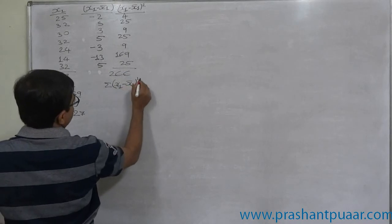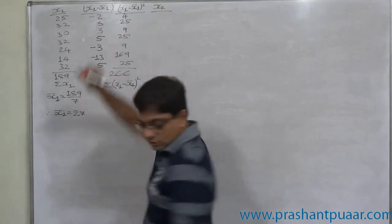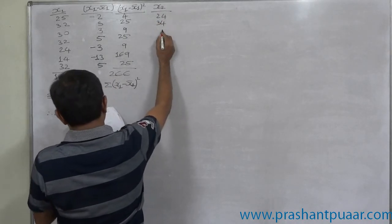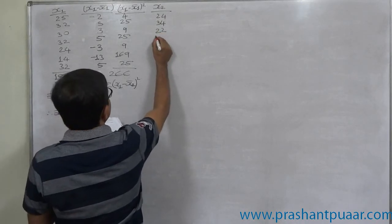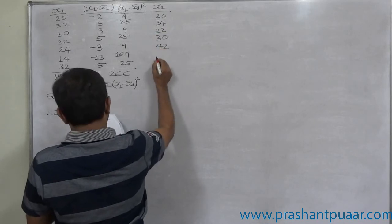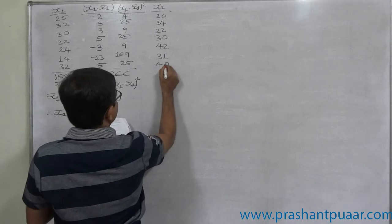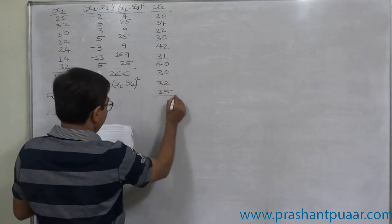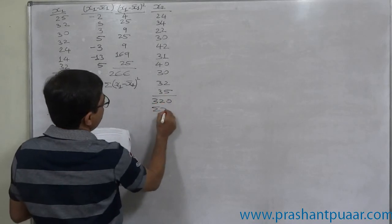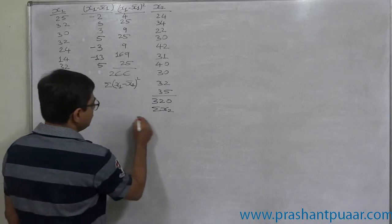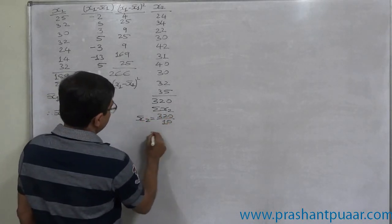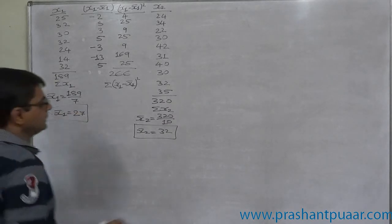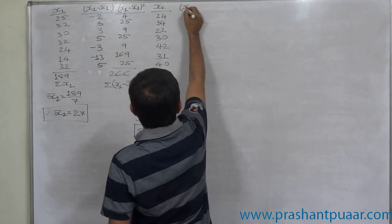Now, diet Y or say x₂, the values are given to be 24, 34, 22, 30, 42, 31, 40, 30, 32, and 35. The sum is 320, Σx₂. So x̄₂ comes to 320 divided by 10, which is 32. Now we have x̄₁ and x̄₂. Again, the mean is integer, we can use x₂ minus x̄₂.